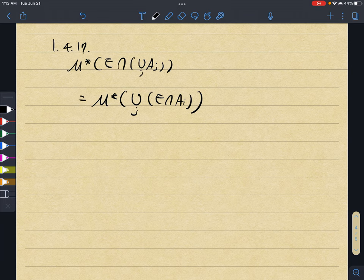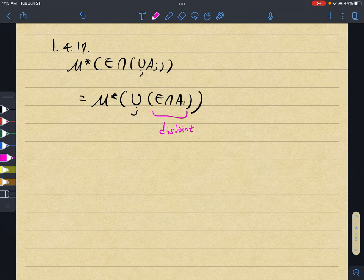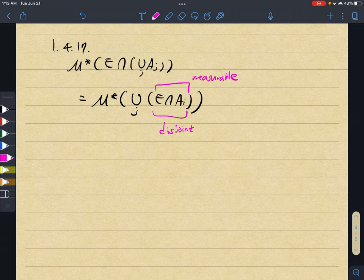I'm not exactly sure, but it doesn't really matter. All we need to do is, because this part is disjoint due to the property of the Aj's, if we can show that this is measurable—well, to be more specific, in the book it's μ* measurable—